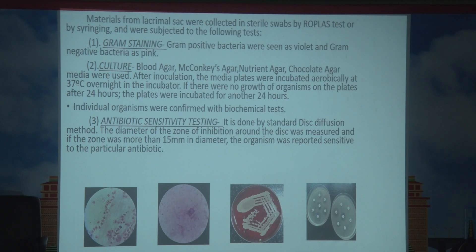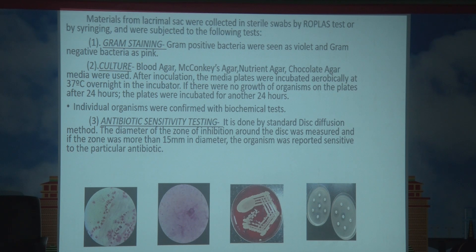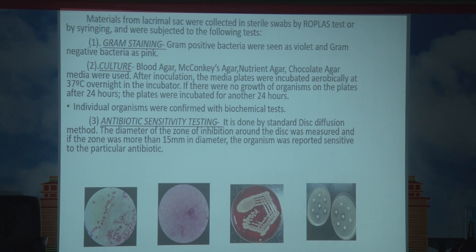Antibiotic sensitivity testing was done by the standard disc diffusion method. The diameter of the zone of inhibition around the disc was measured, and if the zone was more than 15 mm in diameter, the organism was reported as sensitive to the particular antibiotic.